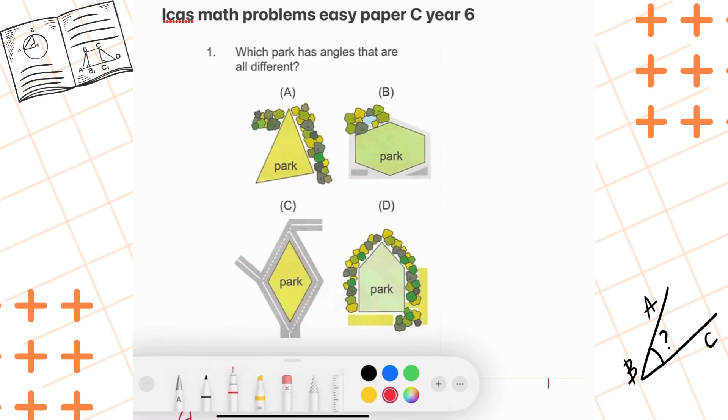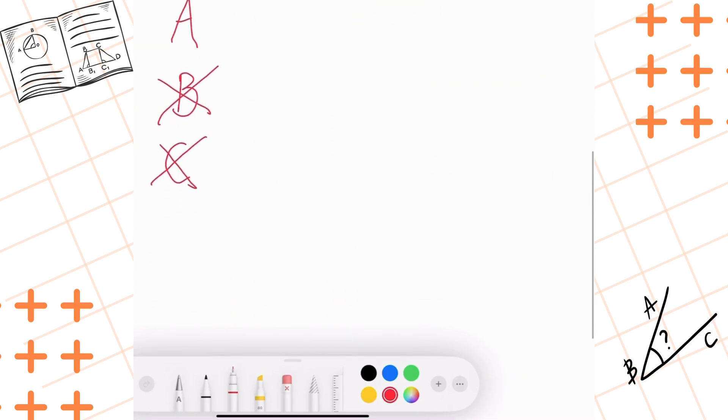As you can see, the bottom of the triangle is shorter than the top ones like this.